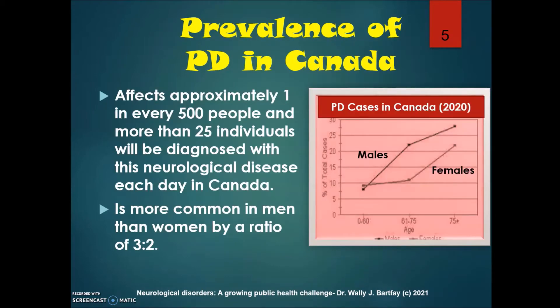Looking at the prevalence of Parkinson's disease in Canada, it affects approximately one in every 500 people, and more than 25 individuals will be diagnosed with this neurological disease each day in Canada. It is more common in men than women by a ratio of three to two, as shown in the Parkinson's disease cases chart for Canada.